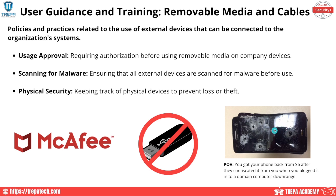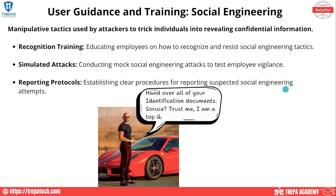Removable media and cables refers to policies and practices related to external devices that can be connected to organizational systems. We may not want users plugging in USBs since that's a great way to introduce a malicious payload. Prior approval for mobile devices or USB connections may be required. DLP or HBSS systems can alert when something is plugged in, and regular check-ins — quarterly or monthly — ensure accountability over any mobile device fleet.